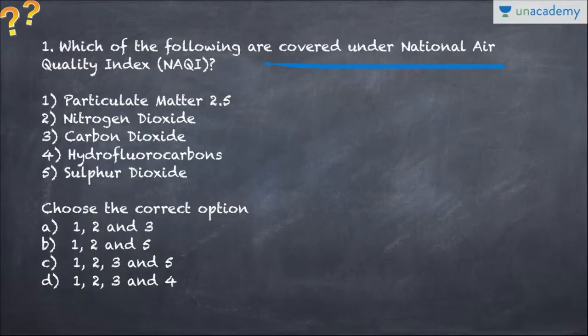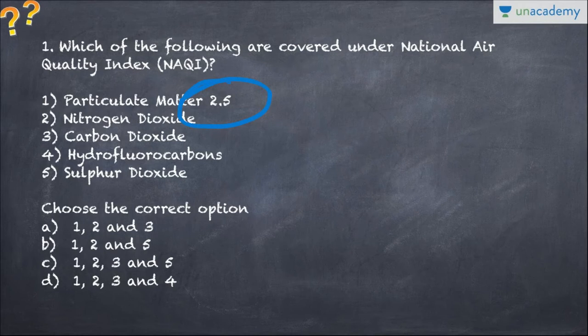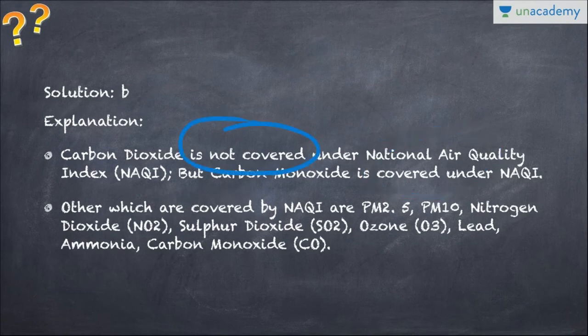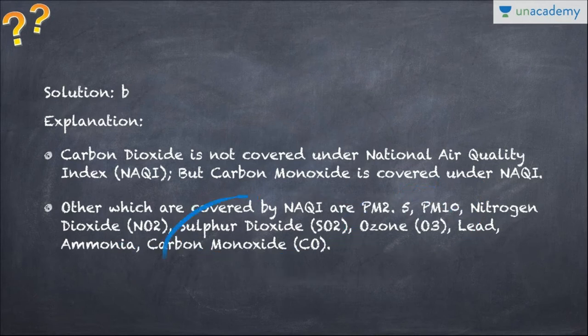Question one: Which of the following are covered under National Air Quality Index (NAQI)? Options include PM 2.5, nitrogen dioxide, carbon dioxide, hydrofluorocarbons, and sulfur dioxide. Carbon dioxide is not covered because it is a greenhouse gas, not a pollutant as such. Hydrofluorocarbons are also greenhouse gases and not in NAQI. The correct answer is one, two, five. NAQI covers PM 2.5, PM 10, nitrogen dioxide, sulfur dioxide, ozone, lead, ammonia, and carbon monoxide.